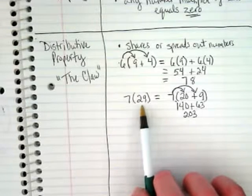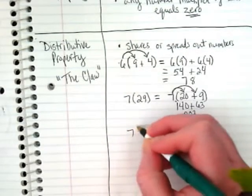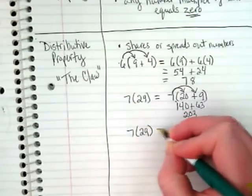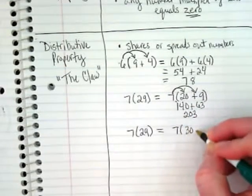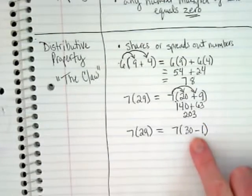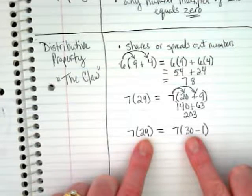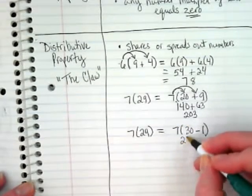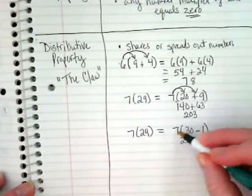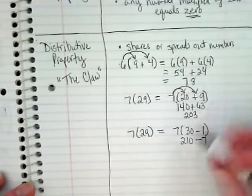If I said twenty-nine and I asked you to round it, what number would you tell me? Thirty. And how far away from thirty is it? One. It's really close to thirty. I'm going to show you another trick with this. Instead of spreading this out and saying seven times twenty plus nine, what if I said seven times thirty minus one? Is what is in this parentheses still equal to what's in this parentheses? Thirty minus one is equal to twenty-nine. Seven times thirty is two hundred and ten minus seven times one would be seven. If I subtract these, I'm still going to get two hundred and three.